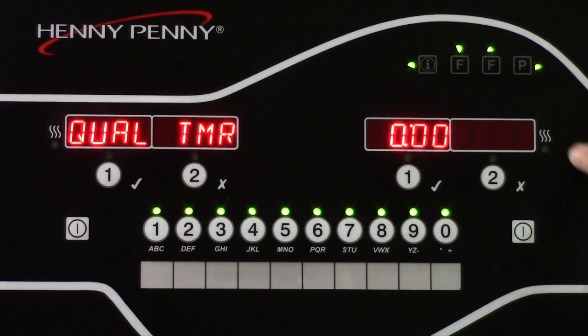For this example, we're going to leave the quality timer at zero. But the quality timer is a timer that starts counting down as soon as the product is done when the timer is canceled. The quality timer indicates how long the product can be held before it would need to be discarded. For example, some stores may set the quality timer in fries to 7 minutes, which means that if the fries don't sell in 7 minutes, they would need to be discarded.